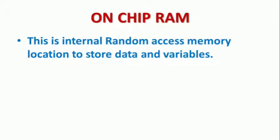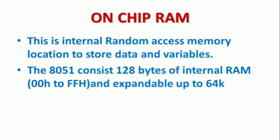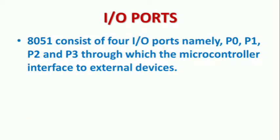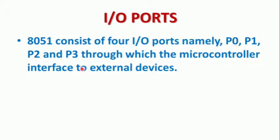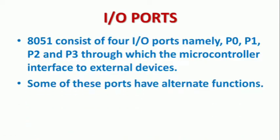The ROM works as random access. The program size is 128 bytes and the RAM size is 64KB. If you use address 00H to FFH, that is the memory location. The 8051 consists of four input-output ports — P0 through P3 — through which the microcontroller interfaces to external devices: output devices, input sensors, and output ports. Some of these ports have alternate functions for data transmission.